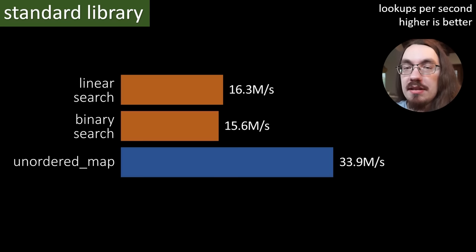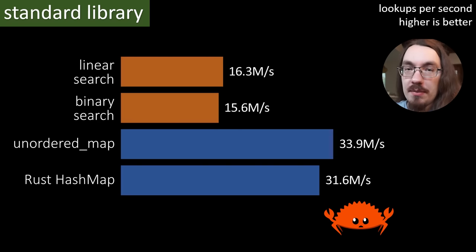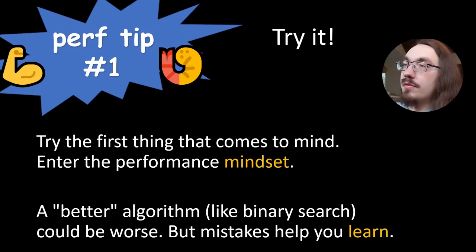But a lot of people say C++'s unordered map is kind of slow. It's stuck in the 1990s in terms of design. So let's look at a more modern hash map implementation, this time from the Rust programming language. It looks like Rust's hash map is not as well optimized as C++'s unordered map, at least for our use case. So performance tip number one, try it. Try the first thing that comes to mind. Enter the performance mindset. The first thing I had in mind was a linear map. I tried it. It works, of course. But then I tried a binary search. I noticed it was a little slower. So then I kept trying other things until I got something that was satisfactory.